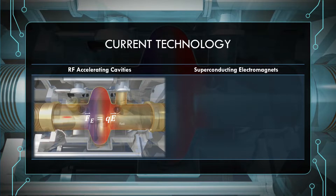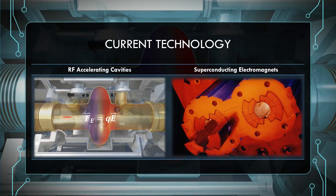This raises the question: how do we bend particle beams in a circle? The answer is with superconducting electromagnets. These are electromagnets made from a special material such as niobium-titanium, which when cooled to below a certain critical temperature attains superconducting properties, including having no electrical resistance. This allows large electrical currents to flow through the electromagnet, generating powerful magnetic fields as strong as 8.3 tesla. Inside synchrotrons like the LHC, two main types of superconducting electromagnets are used: quadrupole magnets, used to focus the beam, and dipole magnets, used to curve the beam in a circular trajectory.